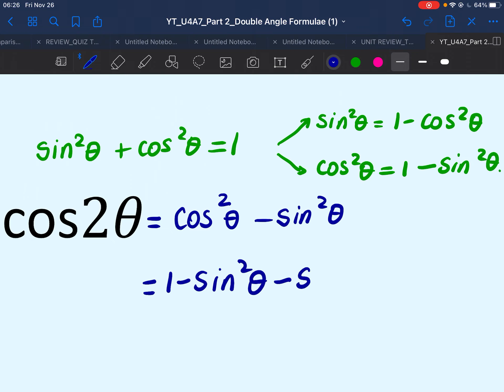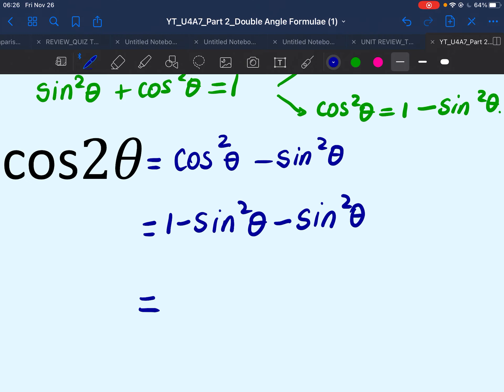then we still have minus sine square theta. Cos 2 theta will simplify to become 1. Remember these two are like terms, they're both negative. So 1 minus 2 sine square theta. Another formula for cos 2 theta.